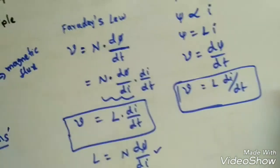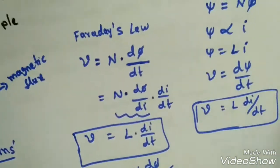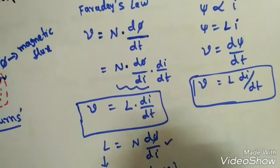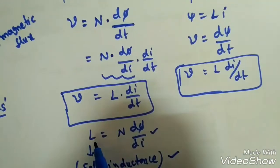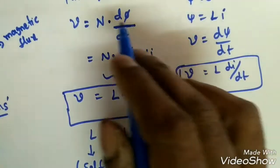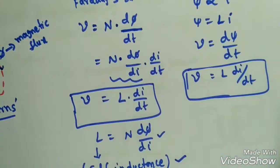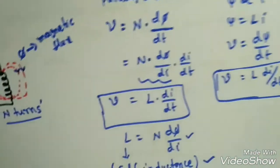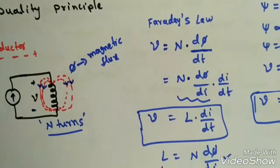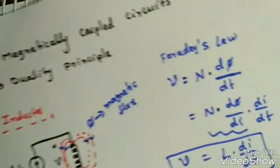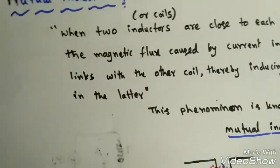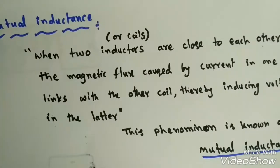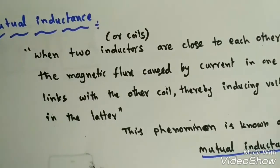This completes the review of the inductor — why L is called self-inductance and what it represents. Keep this in mind as we now go into magnetically coupled circuits.